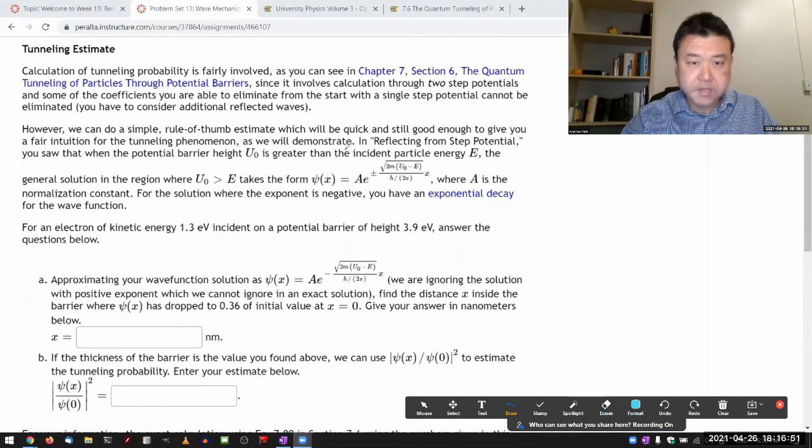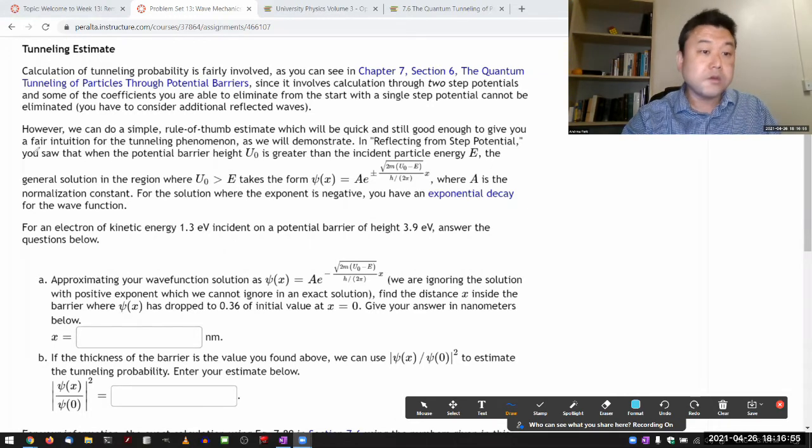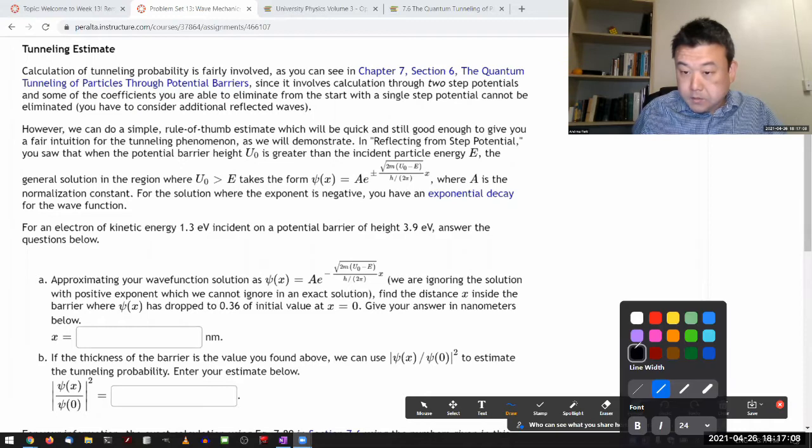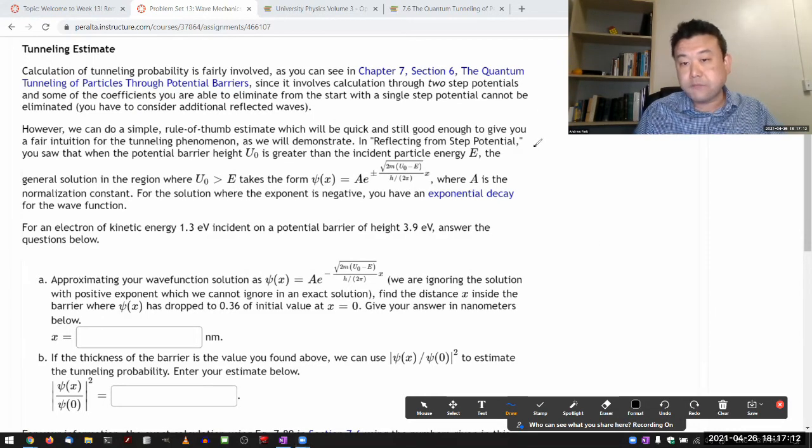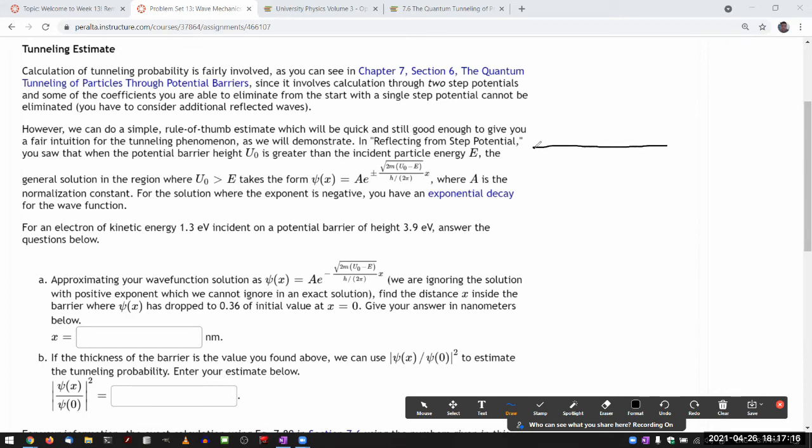That's the purpose of this question 12, which is having you do, frankly, wrong estimate, but an estimate that is easier to understand intuitively, and walking you through the calculation. Even though the answer that you will get will be wrong, you will see the connection to the correct detailed results that you will see derived in the textbook. Let me go through this tutorial.